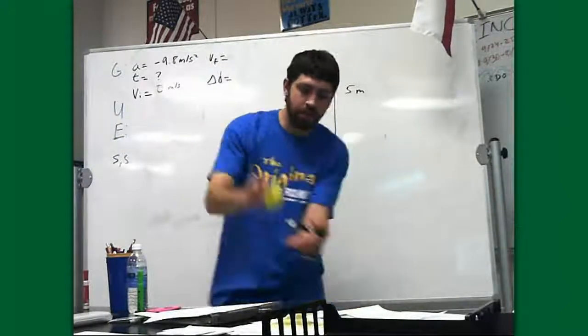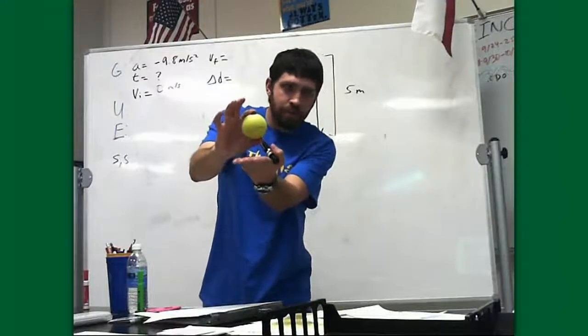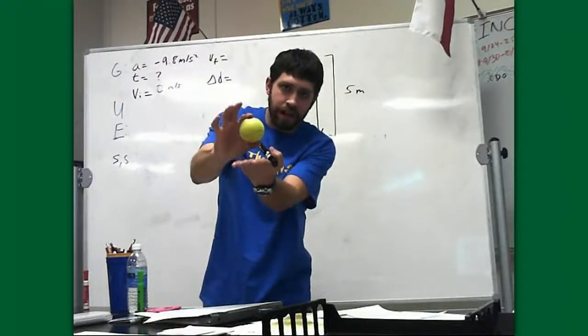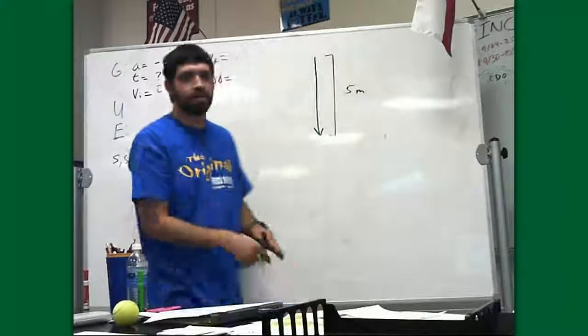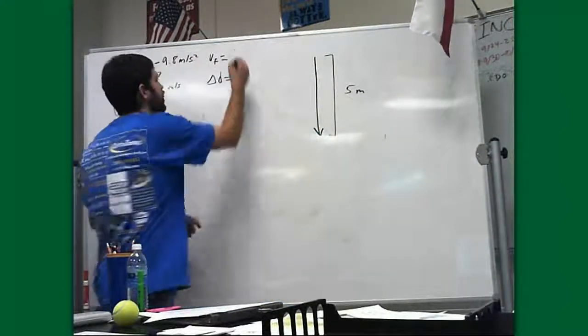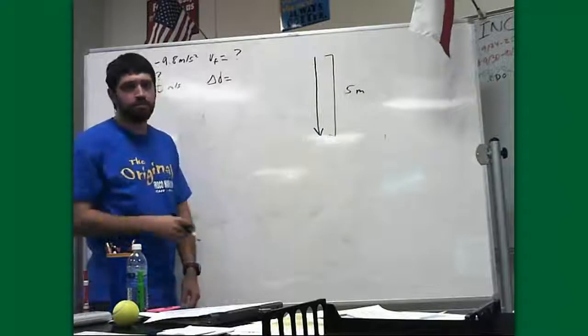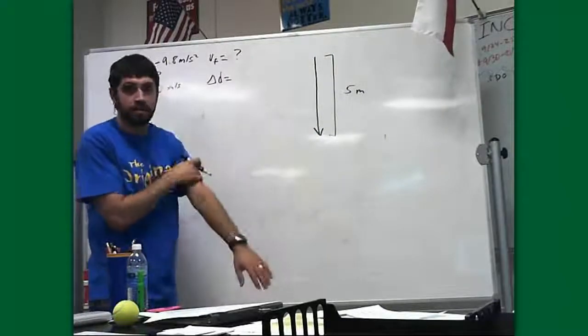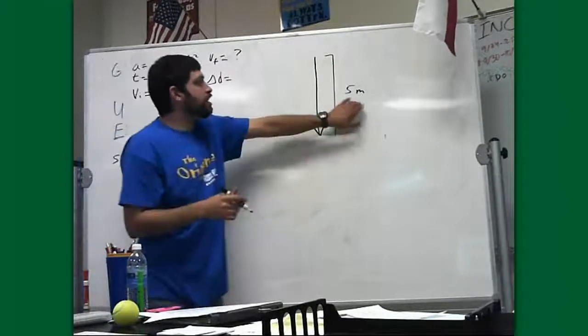When we talk about final velocity, what we mean is, what is the velocity the instant right before that ball hits the ground? How fast is it going right before it hits? Most of the time with free-fall problems, not always, but most of the time, you're not going to know this. We don't know this in this case. It doesn't tell us. Delta D, that's 5 meters.